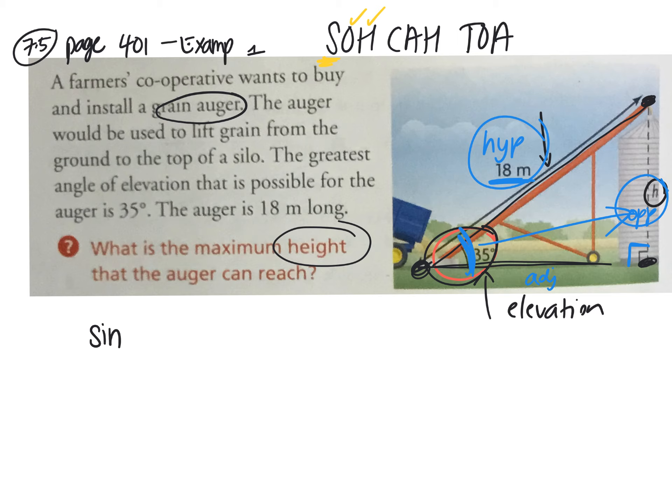So how do we set it up? Sine 35 degrees equals opposite over hypotenuse. What is the opposite side length labeled as? Height, so h over 18. You can put this over 1, right, and then we're going to cross multiply to solve for h.